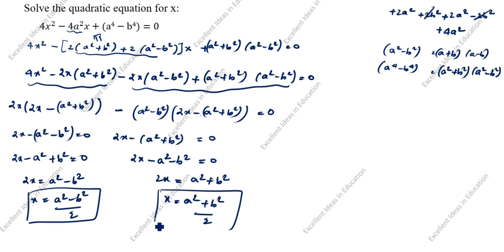So x = (a² + b²)/2 and x = (a² - b²)/2. This is the answer by the first method. Now we will see the second method.